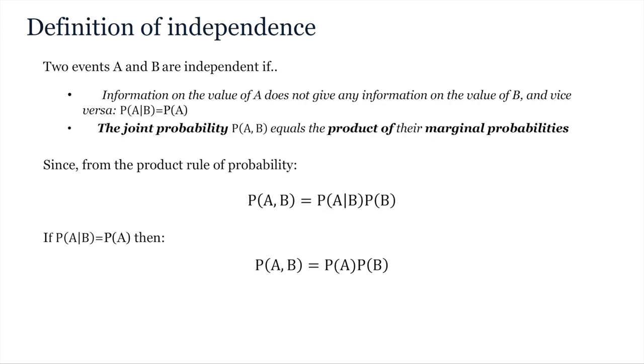Thus the definition of independence is that two events are independent if information on the value of B does not give any information on the value of A and therefore that the joint probability is equal to the product of the marginals. This follows from what we've seen as joint probability is defined as the product of the conditional and the marginal. As independence creates equivalence between the conditional probability of A given B and the marginal of the probability of A, then it follows that the joint probability is equal to the product of the marginals.